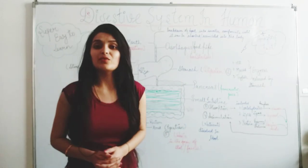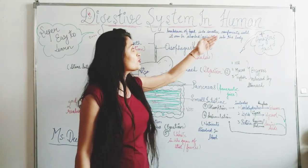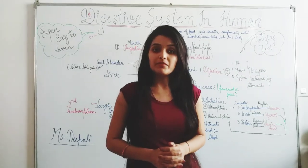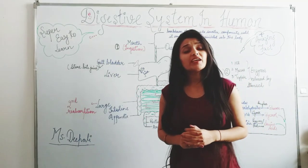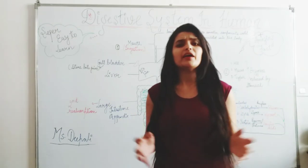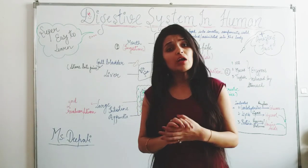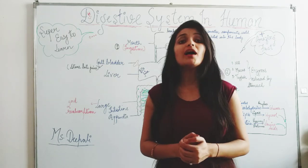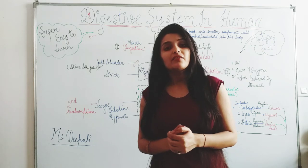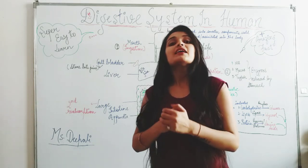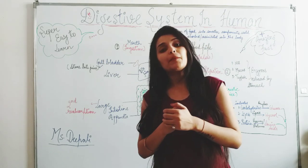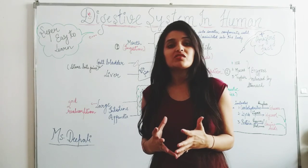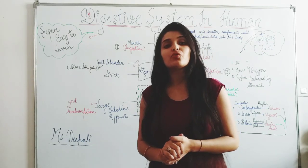Digestive system is a process in which there is a breakdown of food into smaller components until the food is absorbed and assimilated into the blood. It means digestion is a process — if you are eating anything, the food will go into your body and into your blood, and at that time you get energy.